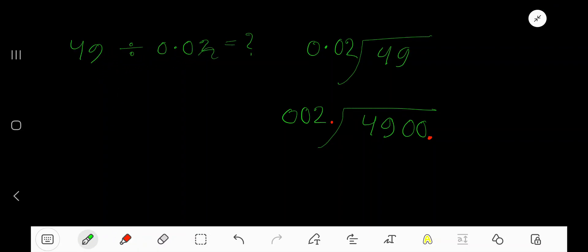49 divided by 0.02. Here 0.02 is the divisor. The divisor is a decimal number, so to divide we need to make this divisor into a whole number. How to do that? Just move the decimal.